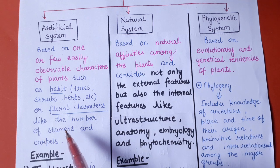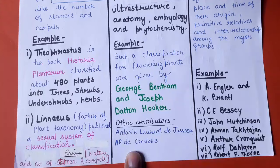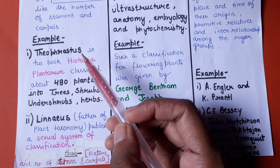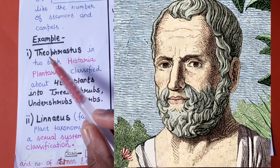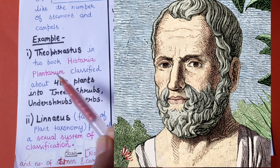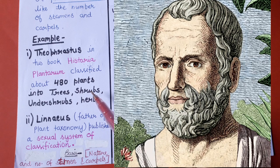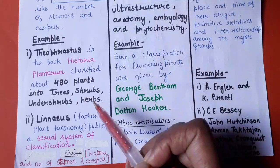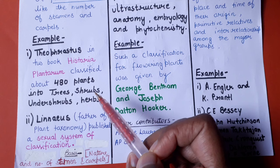Plants have also been classified based on floral characters, as well as the number of stamens and carpels, which was classified by Linnaeus. The artificial system of classification was also published in the book Historia Plantarum, where 480 plants were classified into trees, shrubs, undershrubs, and herbs. This was an artificial system in which plants were classified based on habits.